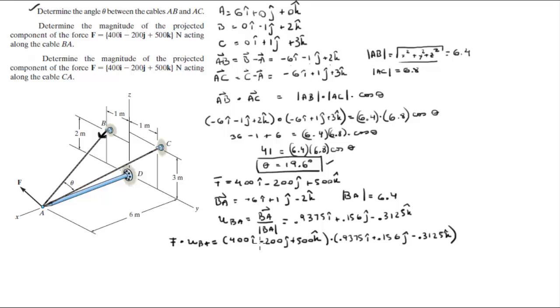So 400 times 0.9375 is about 375 minus 31.2 which is 200 times 0.156 minus 156.25 which is 500 times 0.3125 negative. So this comes out to be 187.55 for the projection of F along BA which is the second part.